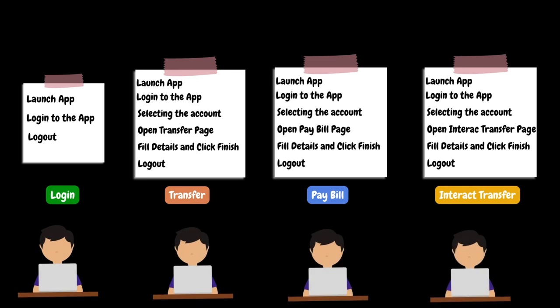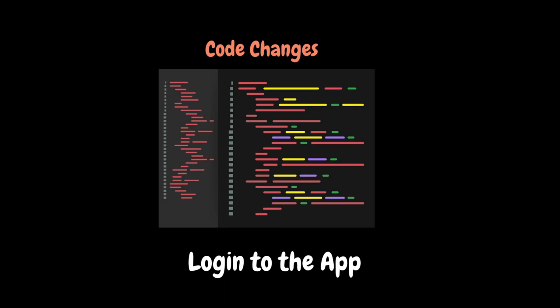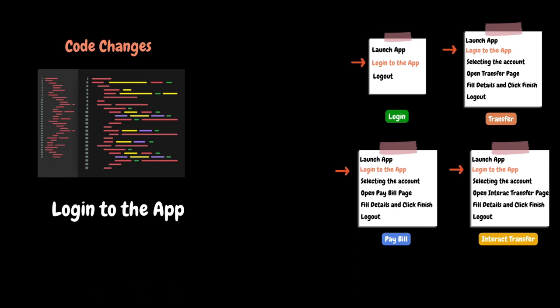Once the detailed navigation steps are understood, the performance test lead will assign these four flows to four performance testers and they will start developing test scripts using tools like JMeter. If you notice the steps in the flows, there are some repetitive steps colored in green. Even though some steps are repeated in each flow, most of the time performance testers will create a separate script for all the steps including the repetitive ones. Creating a separate script with all the repetitive steps is not the correct approach, because if the client makes code changes to any one transaction — for example, the login step — then the performance testers need to update all four scripts, because the login code is duplicated in all four scripts.